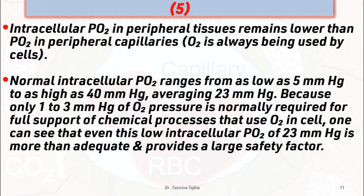Intracellular partial pressure of oxygen in peripheral tissue remains lower than in the peripheral capillaries because oxygen is always being used by the cell. Normal intracellular partial pressure of oxygen ranges from as low as 5 mmHg to as high as 40 mmHg, with an average value of 23 mmHg. Only 1 to 3 mmHg of oxygen pressure is normally required for full support of chemical processes that use oxygen in the cell. Even this low intracellular partial pressure of 23 mmHg is more than adequate and provides a large safety factor.